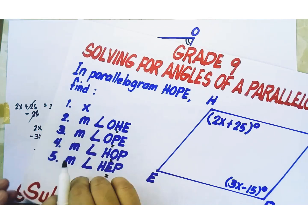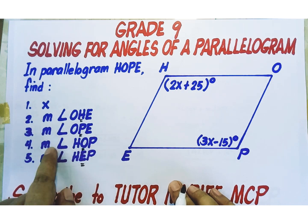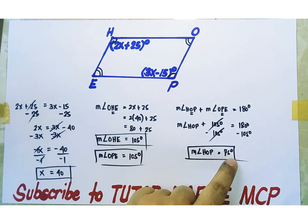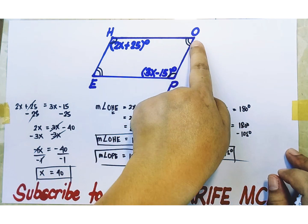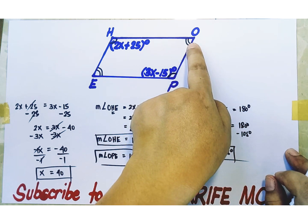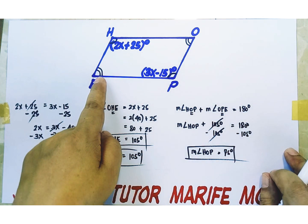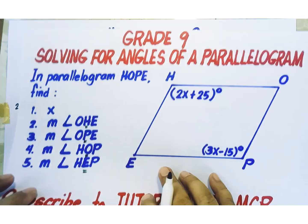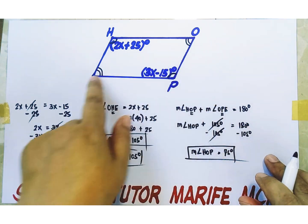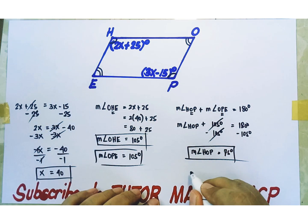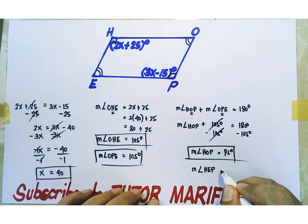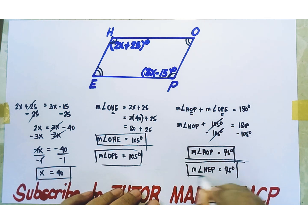So we are able to find the measure of our third indicated angle. Measure of angle HOP is equal to 75 degrees. Angle HOP or angle O is the opposite angle of angle E or angle HEP — this is the last indicated angle. And since opposite angles of a parallelogram are congruent, they have equal measures. Therefore, measure of angle HEP or angle PEH is also equal to 75 degrees.